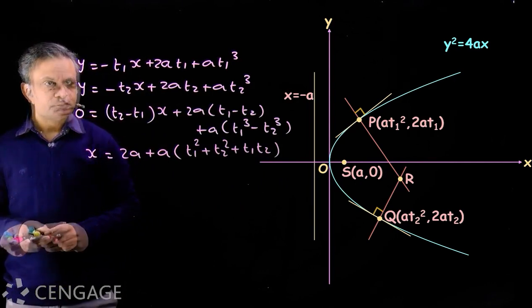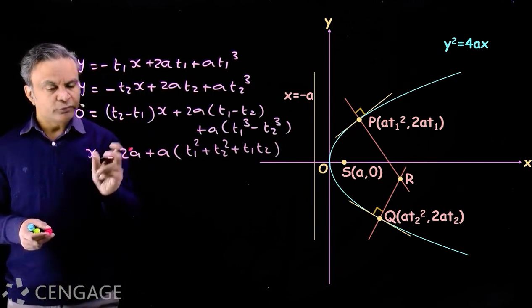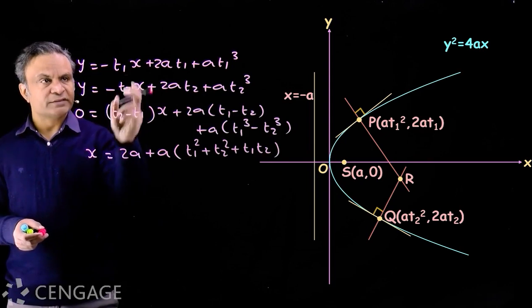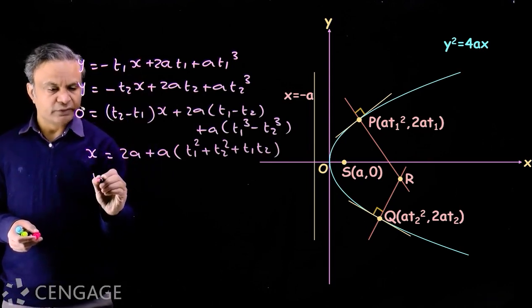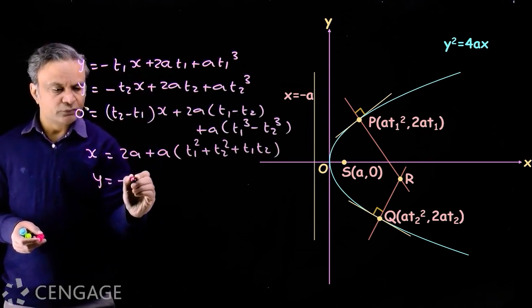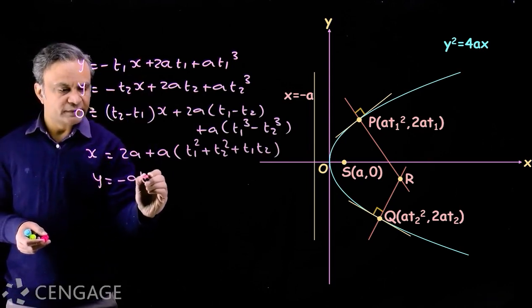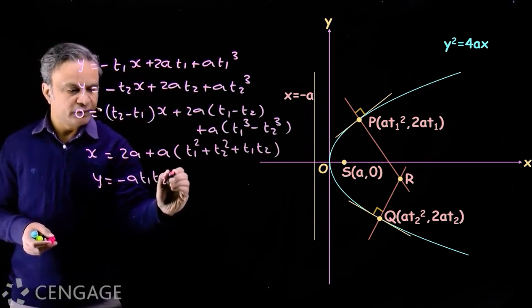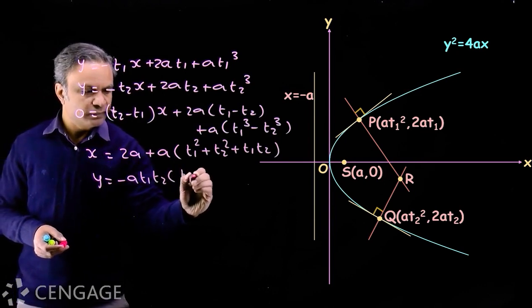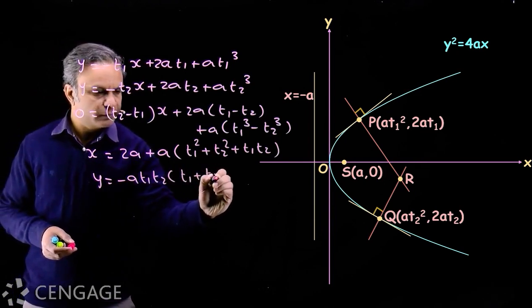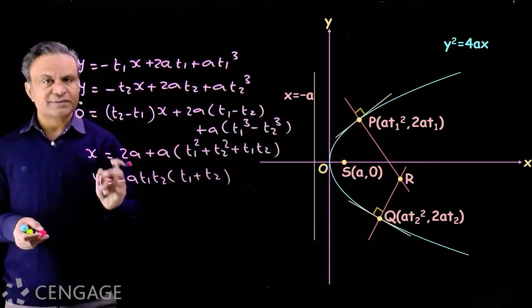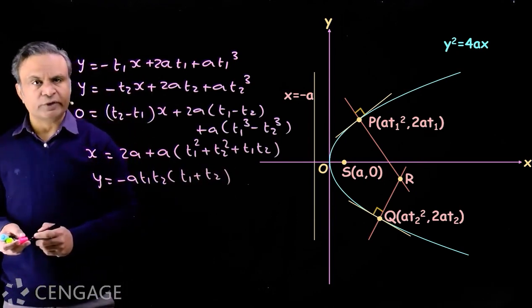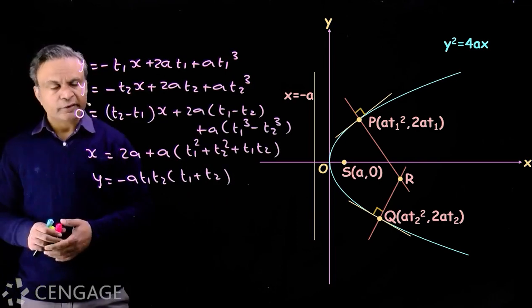Putting this value of x into one of the normal equations, we get y = −a·t1·t2·(t1 + t2). This is the y-coordinate (ordinate) of point R.